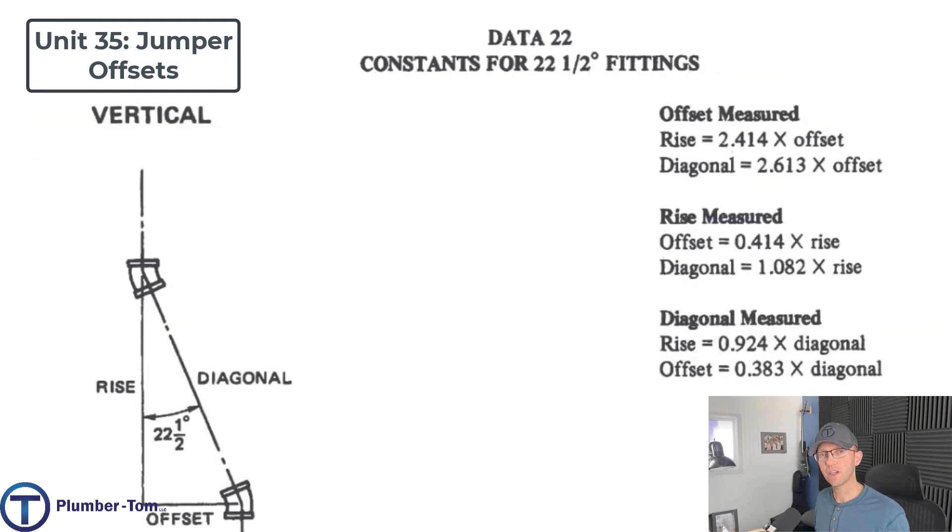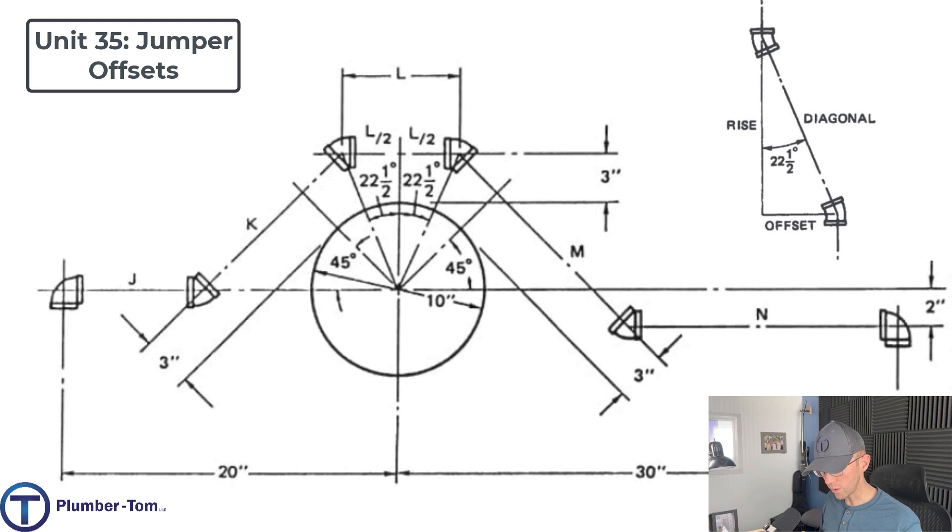Now, as we are gathering information to be able to solve this, we're going to need to remember, jump back to data table 22, which gives us the constants for 22 and a half degree fittings. And the piece that I pointed out in the last video is that if I know what the rise is, I can multiply the rise by 0.414. And that's going to give me the offset. That's the shorter piece. Now, look at this triangle. And let's go back, focus in on the sample problem, and see where that triangle is within the sample problem. Now, as we focus on this, you can see it's actually in there twice. Back to back, it starts at the center of the circle, it spreads out.